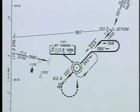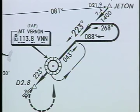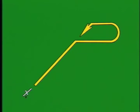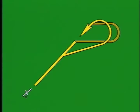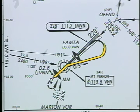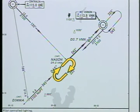At other times, you must execute a procedure turn or course reversal to align your aircraft with the final approach course. The most common procedure turn depicted on approach charts is optional in method — when this symbol is shown, the method of course reversal is your choice. However, you must remain within the protected airspace allotted and fly the reversal on the same side of the course as charted. For some procedure turns, such as a teardrop or holding pattern, the method is not optional and you must fly the procedure exactly as shown.